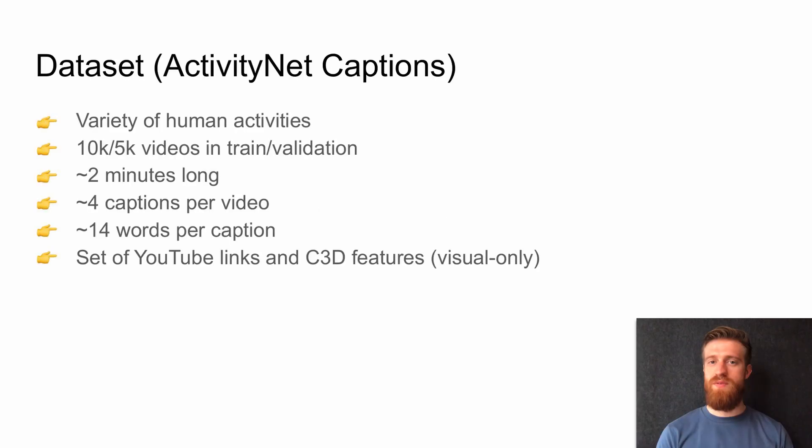For our experimentation, we selected ActivityNet Captions, which sponsor a variety of human activities. The training and validation sets have 10K and 5K videos respectively. On average, a video is 2 minutes long and have 4 captions. Each caption consists of about 14 words. It is distributed as a set of YouTube links and visual-only features. Some of the videos are no longer available on YouTube. So we managed to obtain only 91% of all videos.